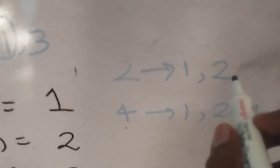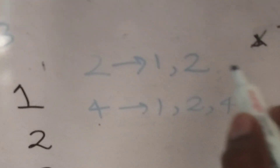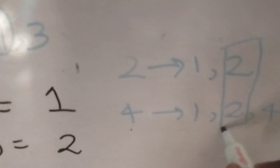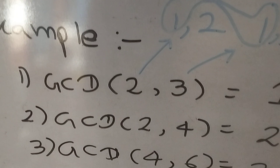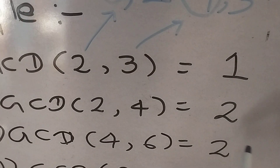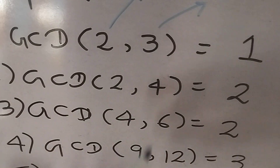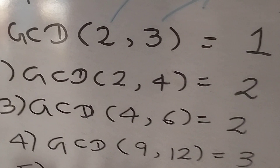If we observe, 1 and 2 are common divisors, but we need the maximum one, which is 2. So GCD(2, 4) = 2. Similarly, GCD(4, 6) = 2, and GCD(9, 12) = 3.